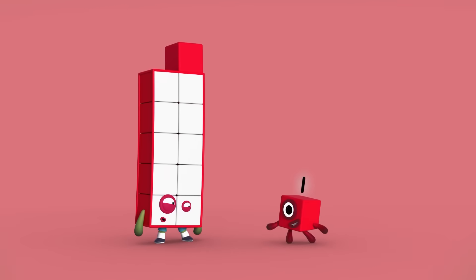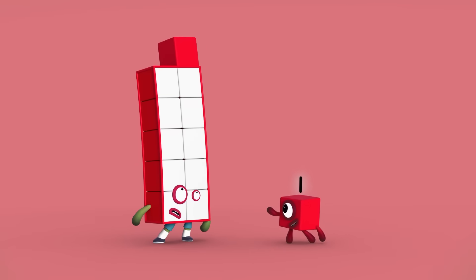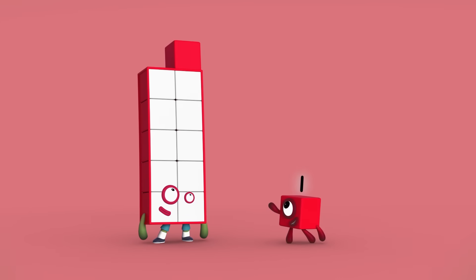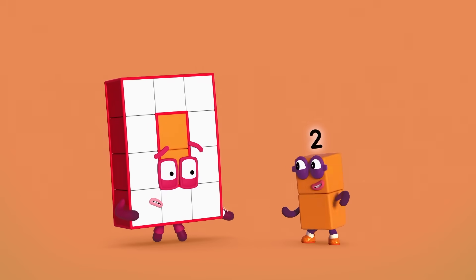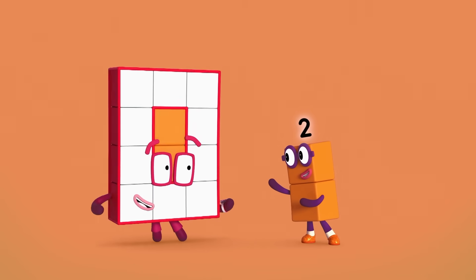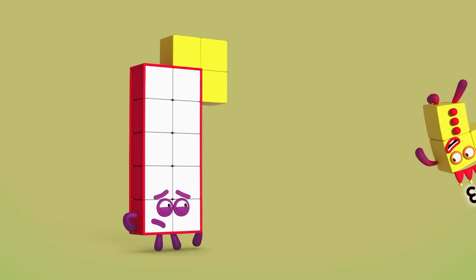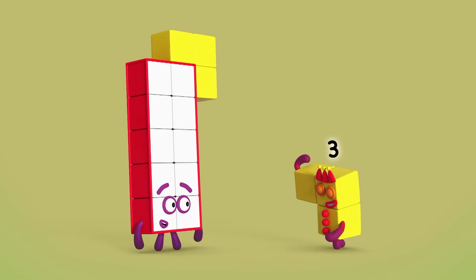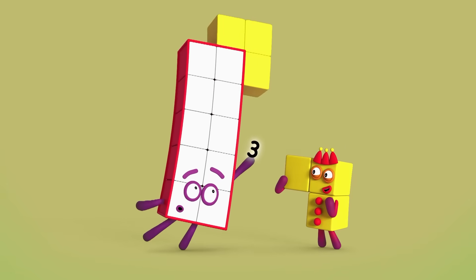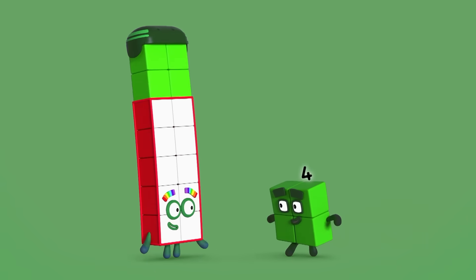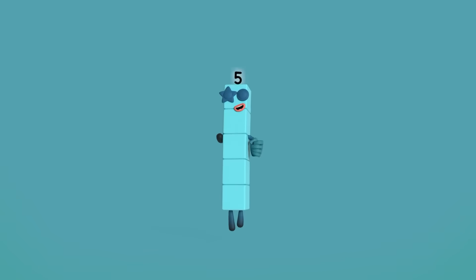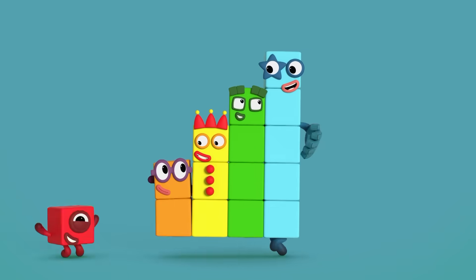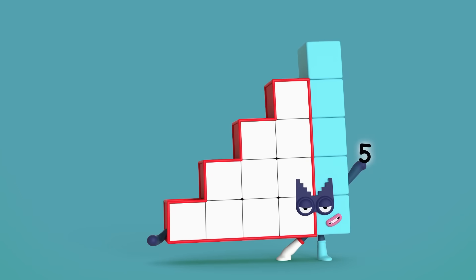Step one. Look, on top of your big block, you've got one red block, like me. Step two. You've got two orange blocks. Like you. Step three. Look at me. Step four. Four green blocks. And step five. Five blue one blocks.